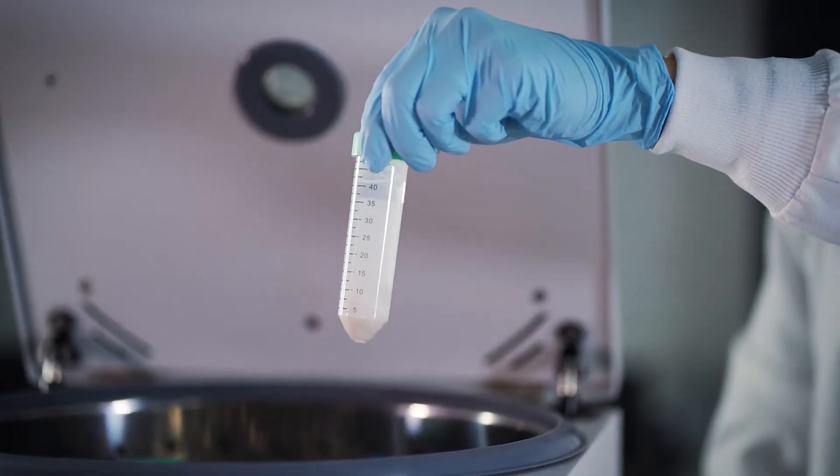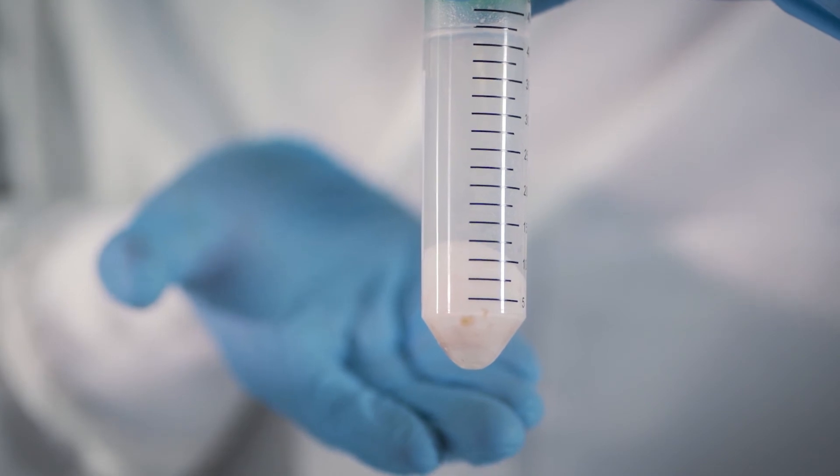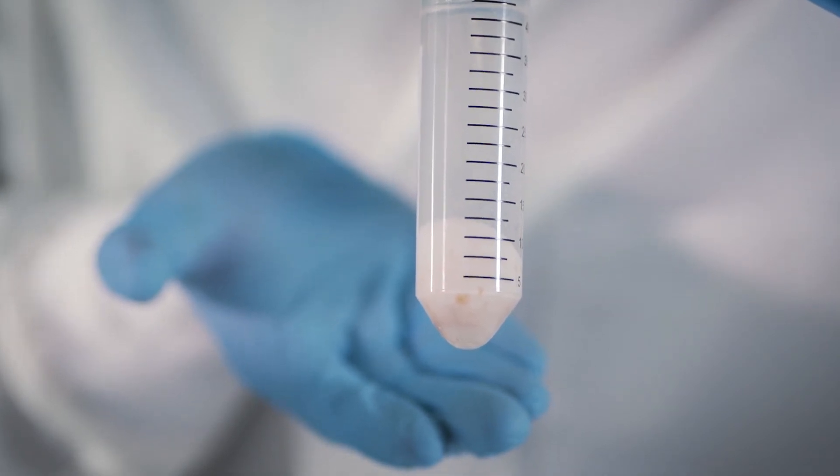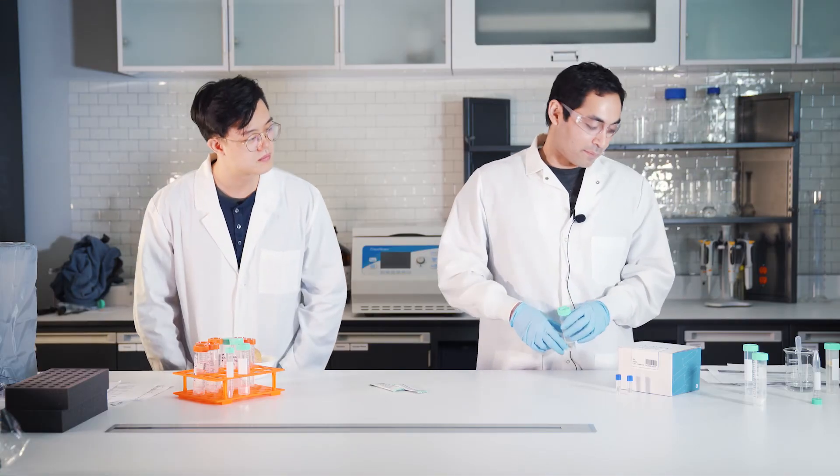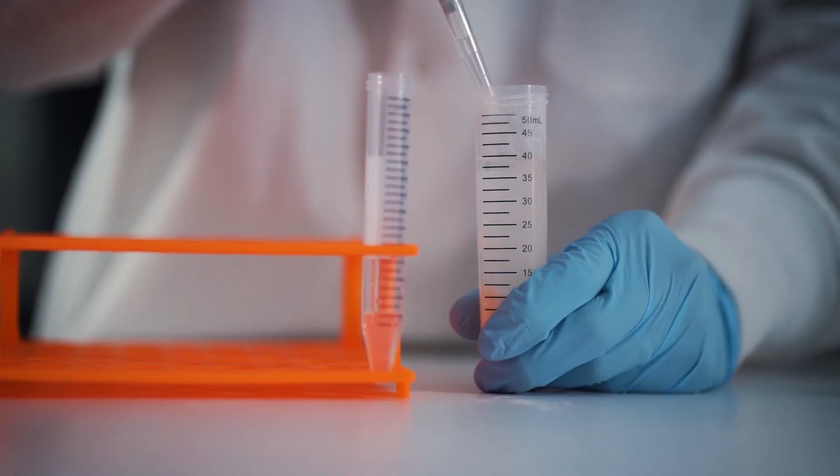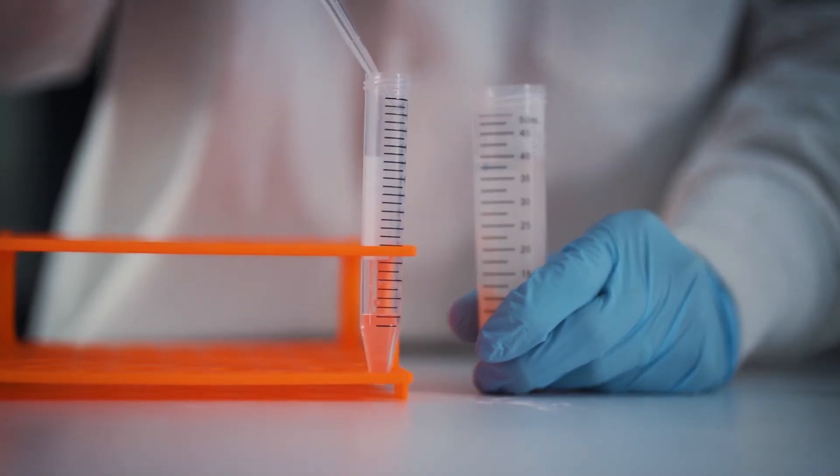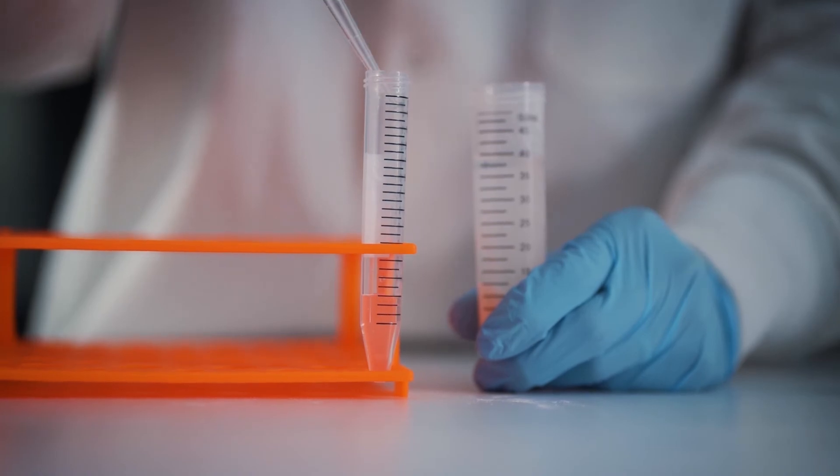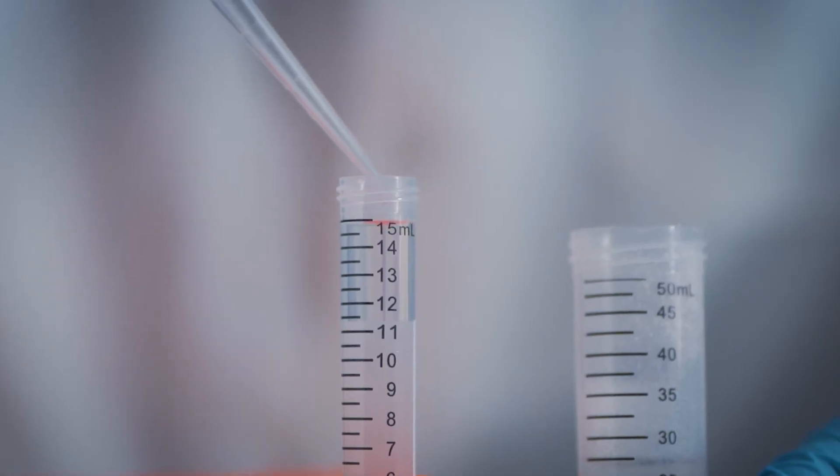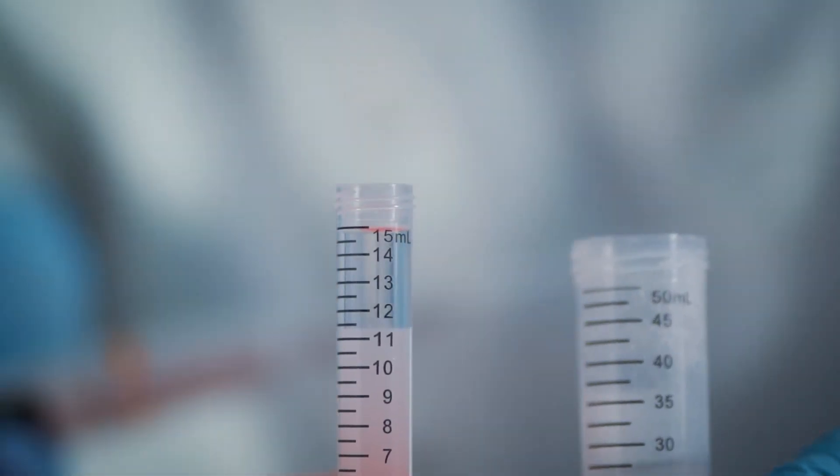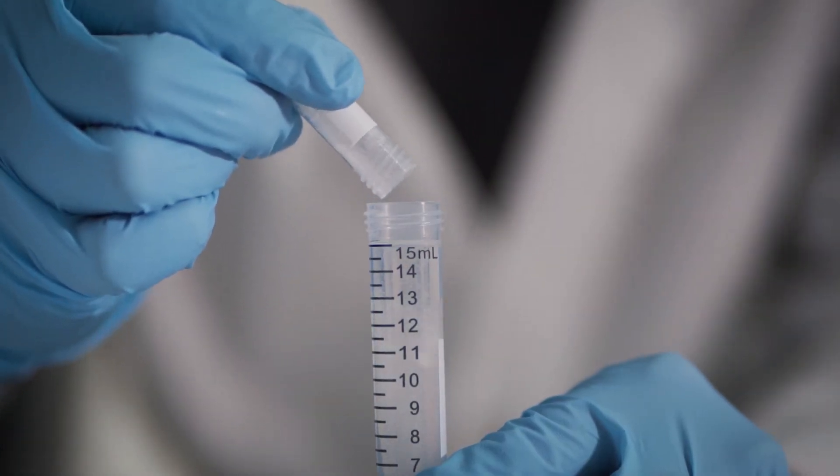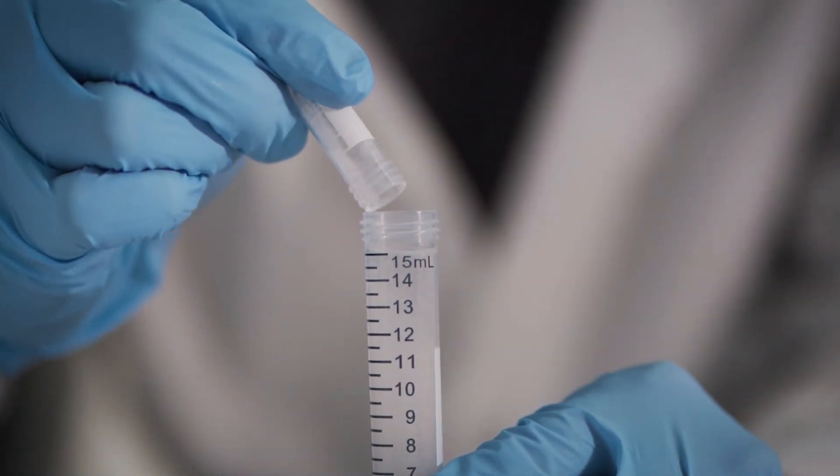Now that everything's centrifuged, you're going to notice that the sample separated in two layers. Now we're ready for the second step. You want to take the supernatant of the sample and pipette that into a 15 mL centrifuge tube, and it's time to add your dSPE salts.